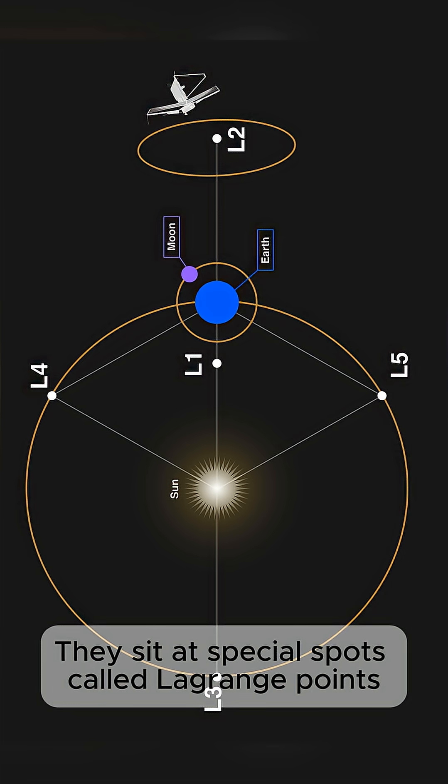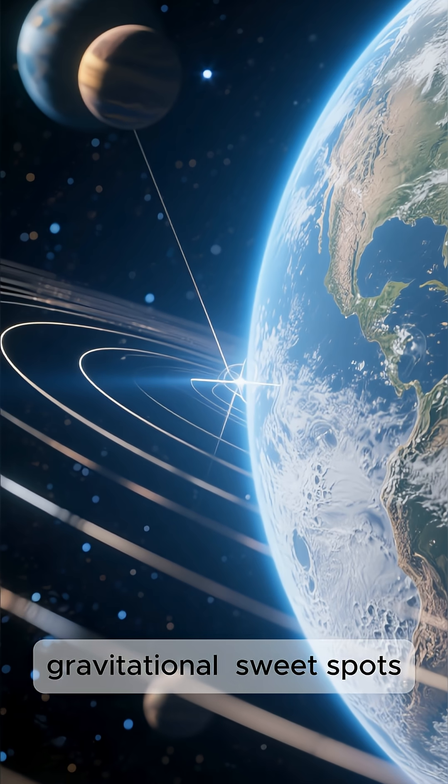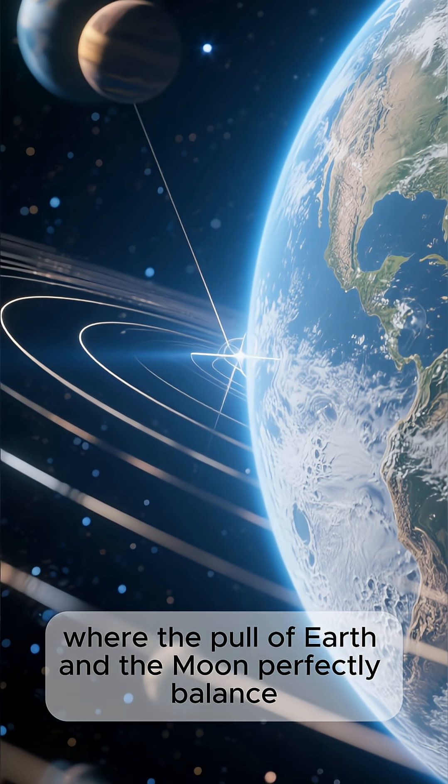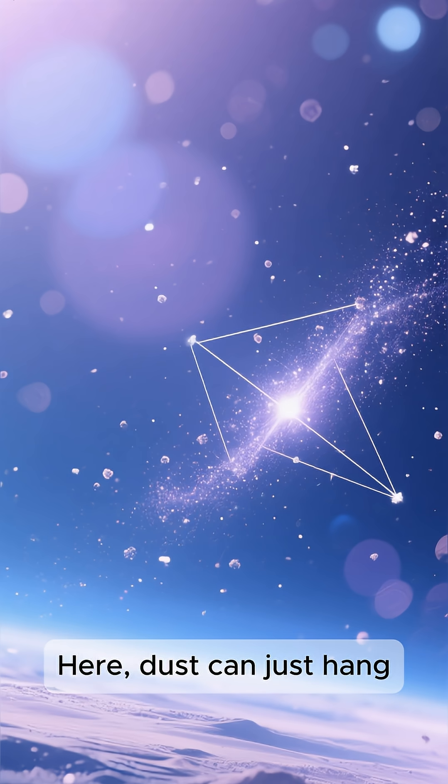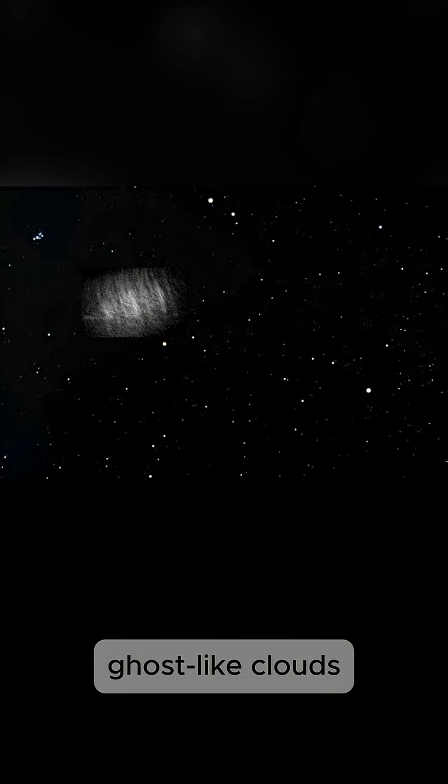They sit at special spots called Lagrange points, gravitational sweet spots where the pull of Earth and the moon perfectly balance. Here, dust can just hang, suspended in space, forming massive, ghost-like clouds.